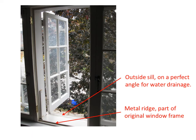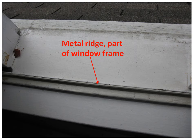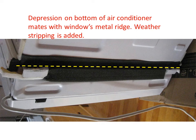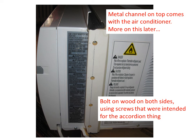You start with the window that looks like this. You will remove both the inside and outside window sashes. You'll note at the bottom of the window there is a metal ridge which is used to control rainwater — that will mate with a depression on the bottom of the air conditioner, shown in this slide. You can't see it very well because it's covered with weather stripping, but that's how the bottom of the air conditioner fits into the window.